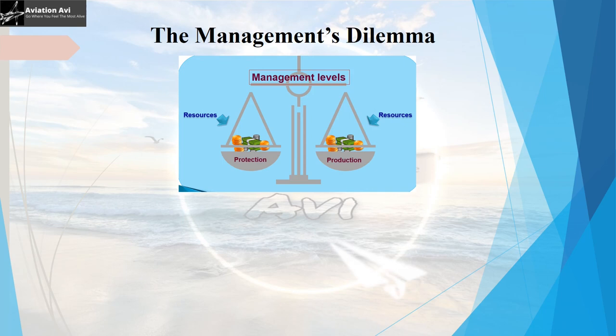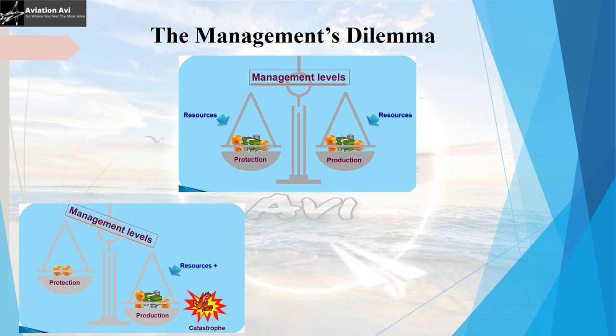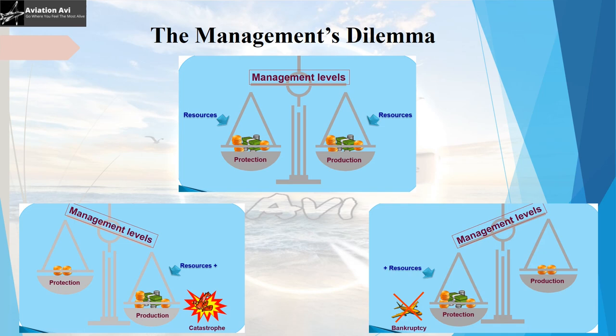Let us look at safety from a management perspective. Management always faces a dilemma between protection and production during resource allocation. If management allocates more resources towards production, there can be a catastrophic incident or accident. But if management allocates more resources towards protection, there can be bankruptcy. The management must ensure proper and efficient allocation of resources so that a balance is maintained between protection and production to ensure safe and profitable operations. And here comes the role of the safety management system.